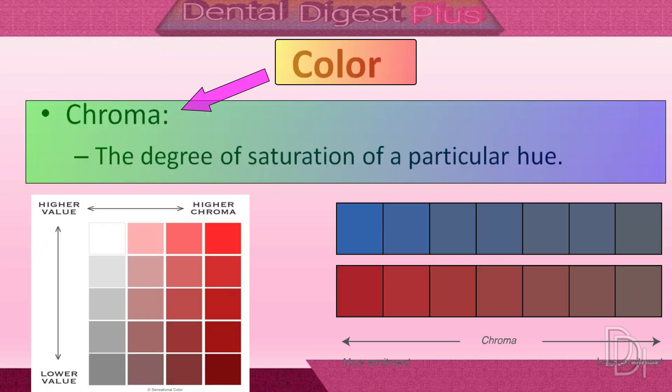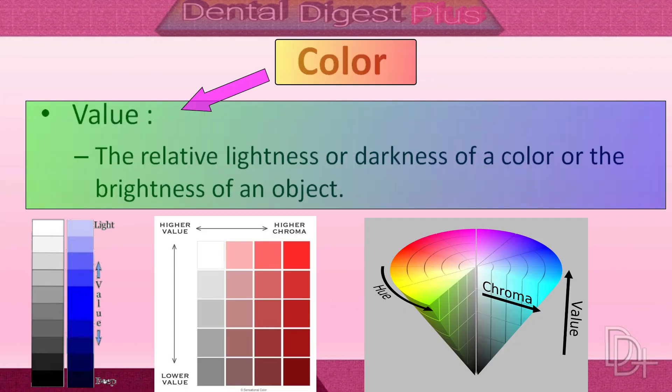Chroma is the degree of saturation of a particular hue. It represents the strength or intensity of the color. If chroma is low, it indicates a weak color; if chroma is high, it indicates a more intense color. Value is defined as the relative lightness or darkness of a color. A value of 0 equals black and a value of 10 equals white — higher value means lighter shade, lower value means darker shade.